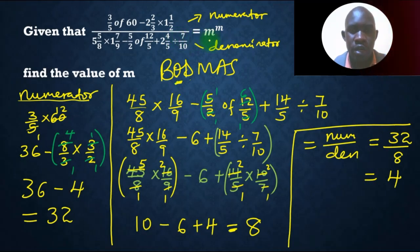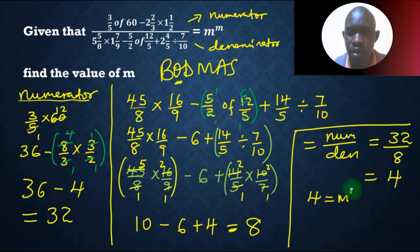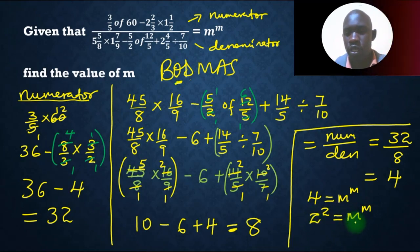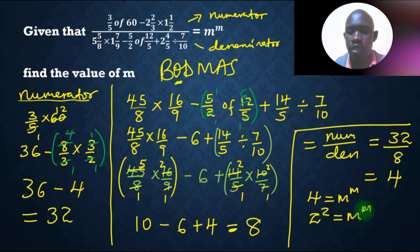Now, but from our question here, all of these values equal to m, that means 4 is equal to m raised to m. But, we can write 4 in terms of prime factor, which is the same as 2 raised to 2, which is equal to m raised to m. So, you can be able to see 2 is equivalent to m, and also the index part, that is the power part, is equal to m. Therefore, m is equal to 2.